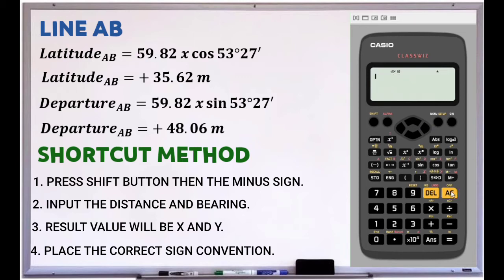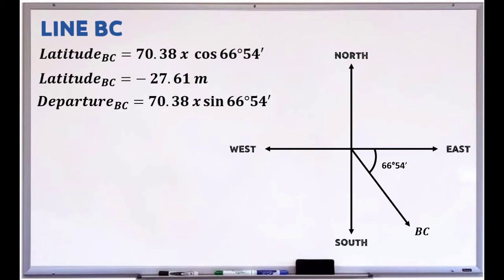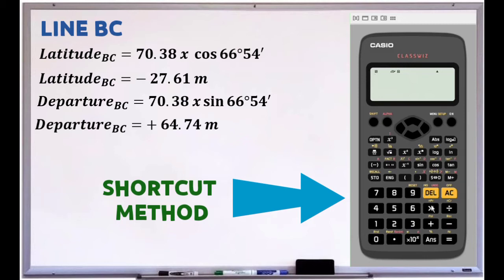Input or place the correct sign convention based on the direction. For line BC, which lies in the second quadrant, the latitude is negative and the departure is positive. The latitude of line BC equals 70.38 × cos(66°54') = negative 27.61. The departure of line BC equals 70.38 × sin(66°54') = positive 64.74.